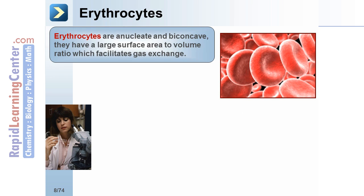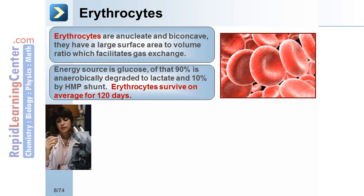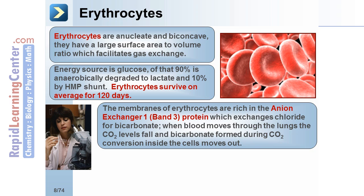Erythrocytes are anucleate and biconcave. They have a large surface area to volume ratio, which facilitates gas exchange. Their energy source is glucose — 90% is anaerobically degraded to lactate and 10% by HMP shunt. Erythrocytes survive, on average, for 120 days. The membranes of erythrocytes are rich in the anion exchanger 1, or band 3, protein,